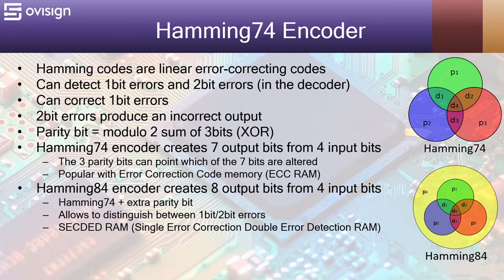Hamming codes are linear error correcting codes. They can detect one-bit errors and two-bit errors. The detection is done in the decoder. These codes can also correct one-bit errors. Two-bit errors produce an incorrect output. Hamming codes are based on parity bits. A parity bit is the modulo two sum of three bits which is an XOR operation.